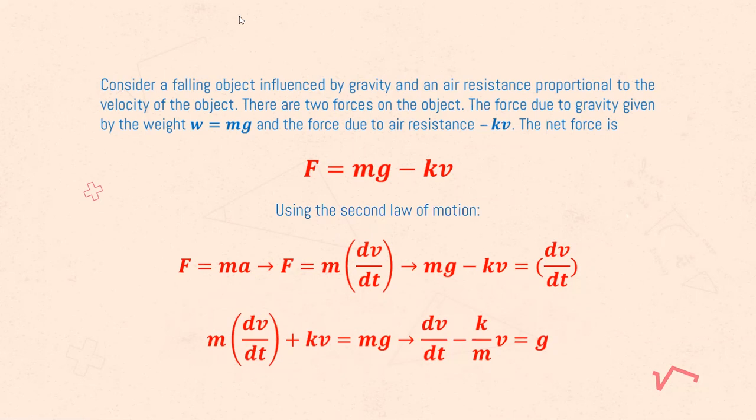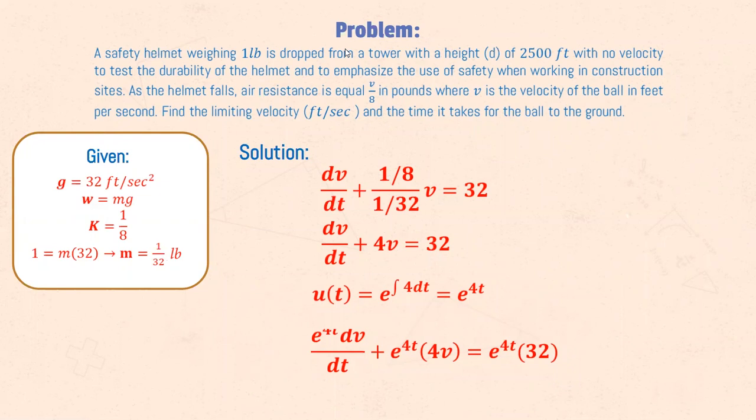Here's a sample problem where a safety helmet weighing one pound is dropped from a tower with a height of 2500 feet with no velocity to test the durability of the helmet and to emphasize the use of safety when working in construction sites. As the helmet falls, air resistance is equal to v over 8 in pounds where v is the velocity of the ball in feet per second. Find the limiting velocity and the time it takes for the ball to hit the ground.